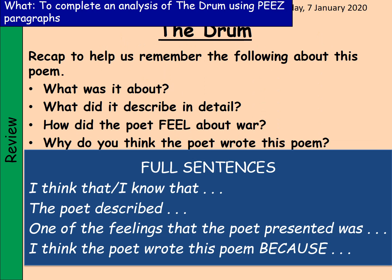Make sure you've got those correct definitions with the words so that you have them for future reference and to help your vocabulary. Just to make sure that we understand the poem, I want us to do a quick recap. Thinking about these questions: What was it about? What did the poet describe in detail? How did the poet feel about war? And why do you think the poet wrote this poem? I want you to write in four sentences: 'I think that...', 'I know that...', 'The poet described...', 'One of the feelings that the poet presented was...', and 'I think the poet wrote this poem because...'. Make sure you use four sentences and complete your response.